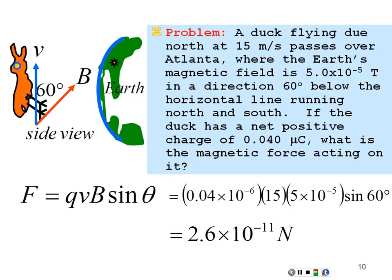For direction: pointing in the direction of velocity (north) and closing toward the magnetic field (downward into Earth at 60°), the force comes out directed into the page — which is west from our side-view perspective. So the duck feels a small force to the west.